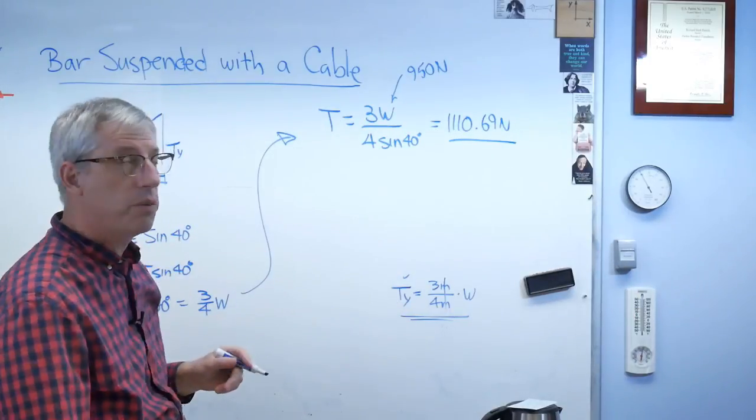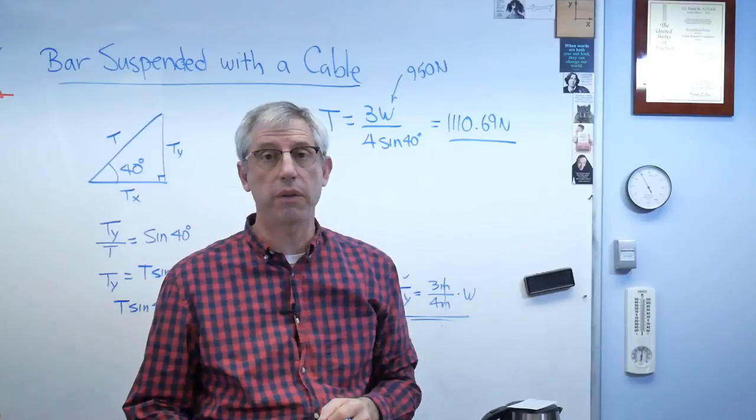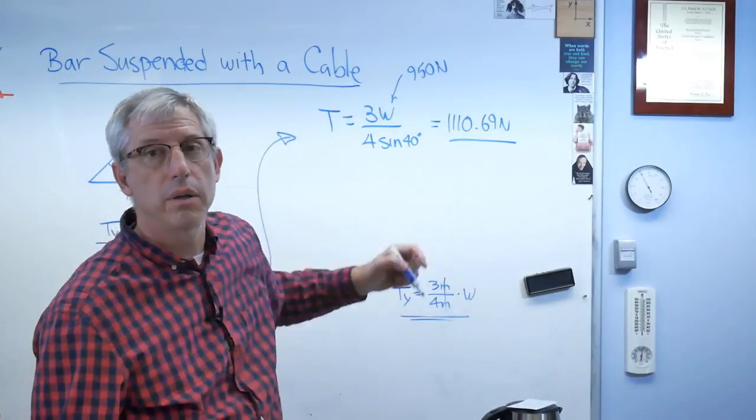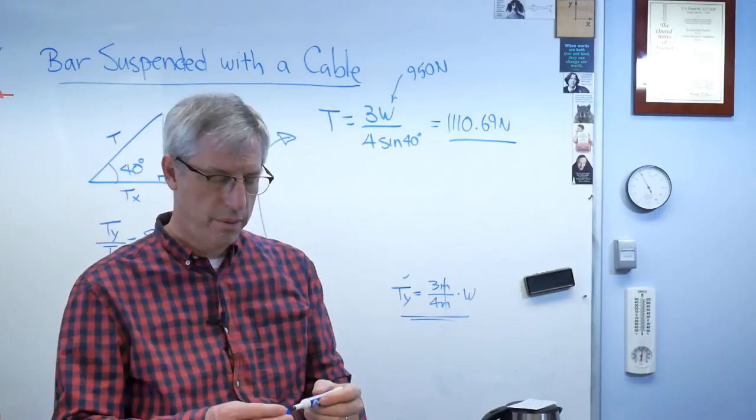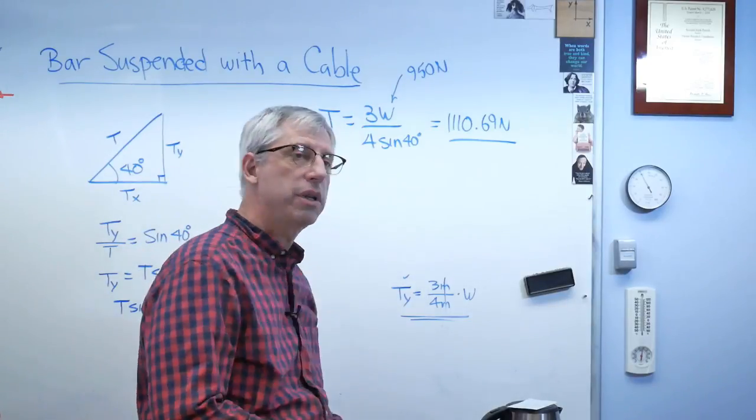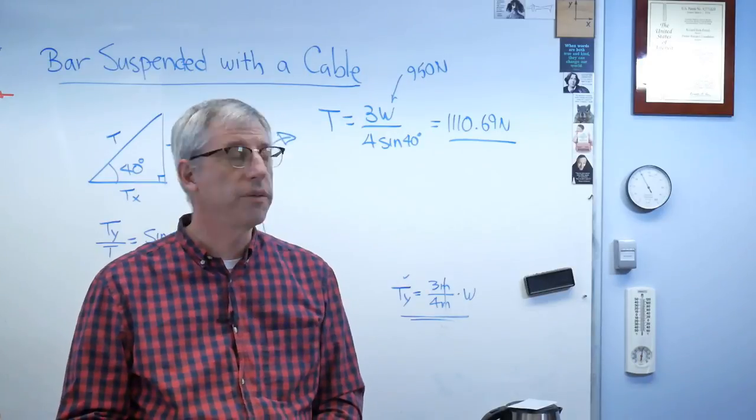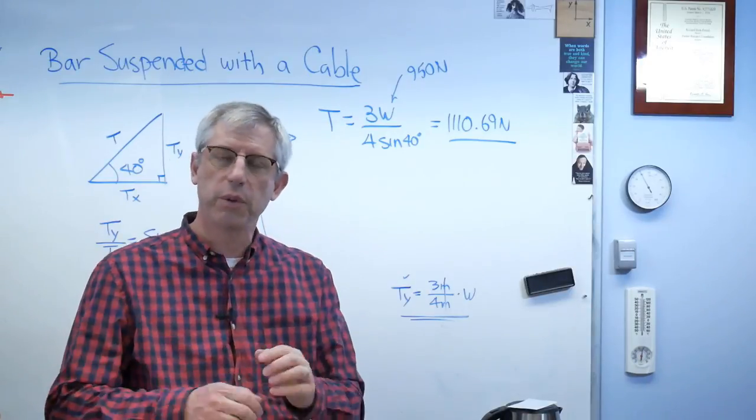So, step three in the recipe was to write out the equations of equilibrium, which we did. Step four, solve for something. Step five, which is optional, is to go enjoy baked goods, which I'm about to do right now. I hope this helps. And we'll talk to you next time.